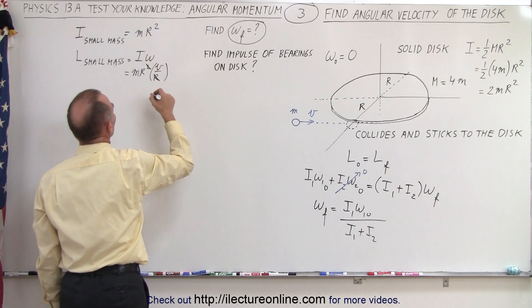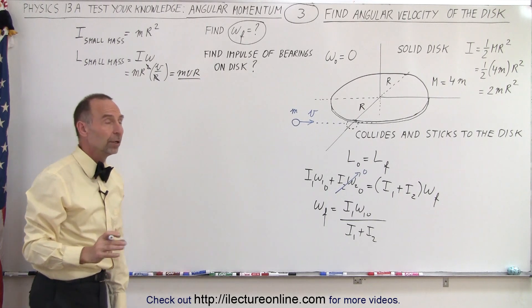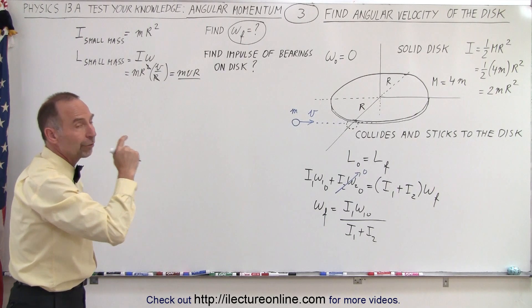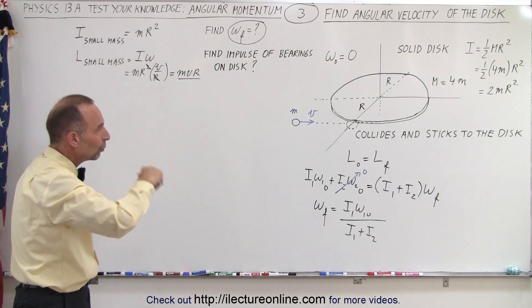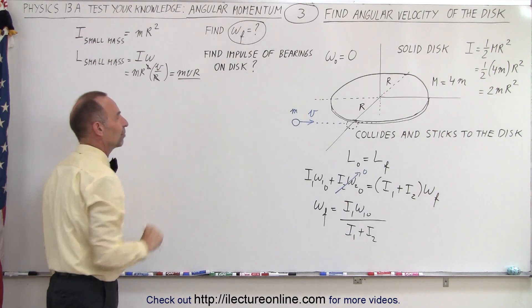Then one of the r's cancels out and we're left with mvr, which by now should be familiar. Anytime we have an object traveling in a straight line path and we want to convert that to angular momentum once it hits an object and starts going in a circular path, it will be m times v times r.